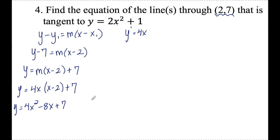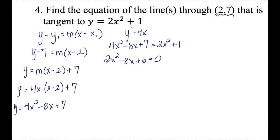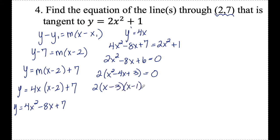I know that the tangent line intersects the curve 2x squared plus 1, so I set 4x squared minus 8x plus 7 equal to 2x squared plus 1. Subtracting 2x squared and 1, I get 2x squared minus 4x plus 3 equals 0 after factoring out 2... wait, factoring x squared minus 4x plus 3 gives (x minus 3)(x minus 1). So I have tangent lines through (2, 7) when x equals 3 and when x equals 1.